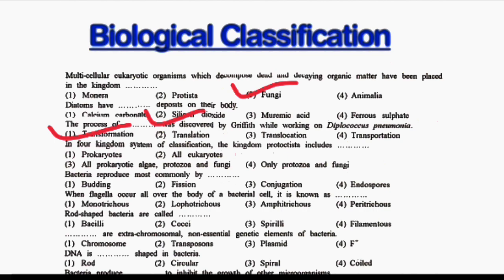Next question: in the 4-kingdom system of classification, kingdom Protista includes DASH. Option 1: Prokaryotes. Option 2: All Eukaryotes. Option 3: All Eukaryotic Algae, Protozoa and Fungi. Option 4: Only Protozoa and Fungi. The correct answer is Option 3, that is All Eukaryotic Algae, Protozoa and Fungi.